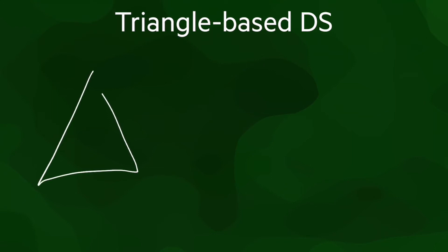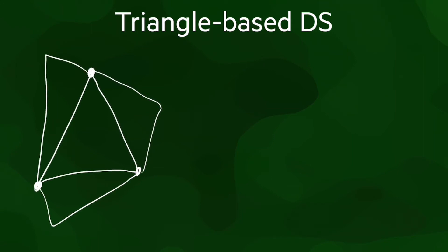In a triangle-based data structure, each triangle has links to its three adjacent triangles and to its three incident vertices. In an implementation, it might look something like this.